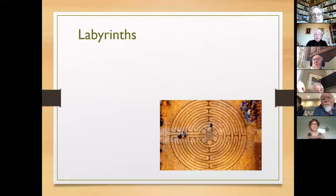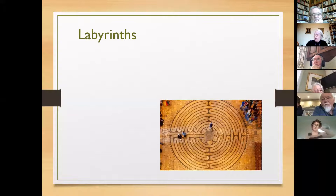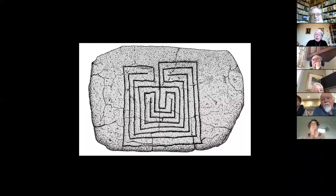We now move to another specialist floor item: a labyrinth. A labyrinth is a maze with only one path and no element of choice. They were popular motifs during the Roman period and it was not long before they found their way onto church floors — both mosaic, tile, and stone. This Linear B inscribed tablet from Pylos in Greece, with a labyrinth on its reverse, dates to about 1200 BCE and is the only known occurrence of the labyrinth symbol in the Minoan and Mycenaean world.